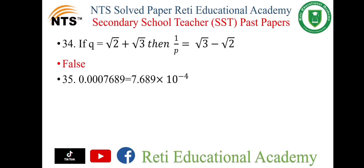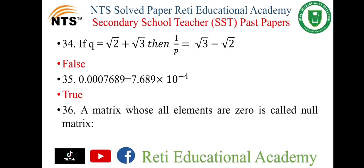Question number 35: The measure of 0.00076 89 is equal to 7.689 into 10 to the power minus 4. It is true.